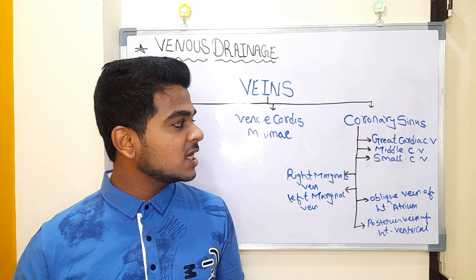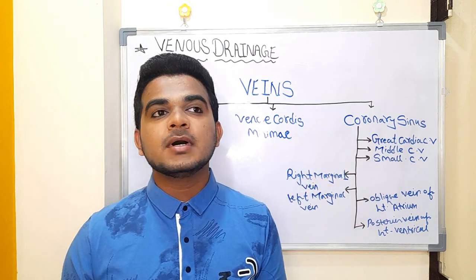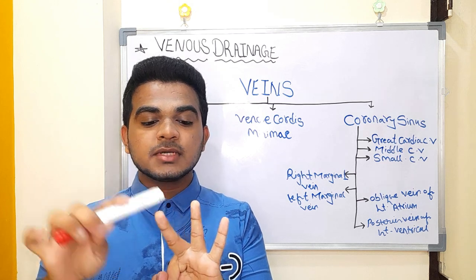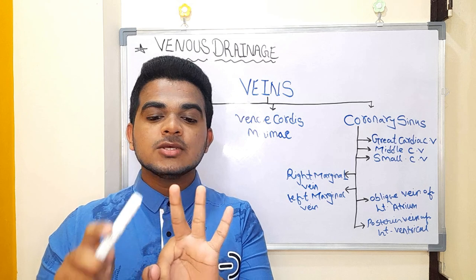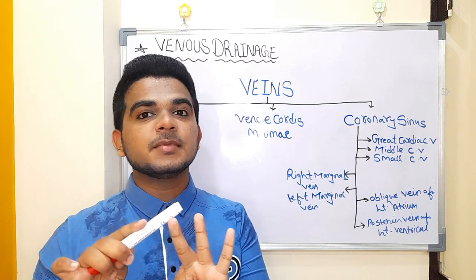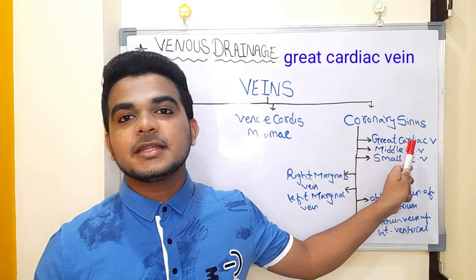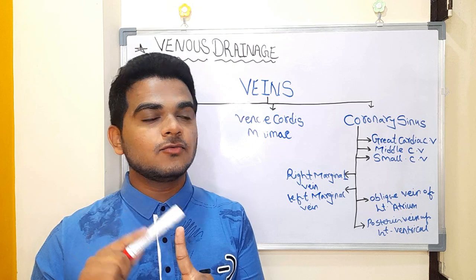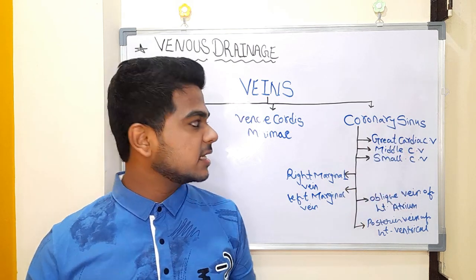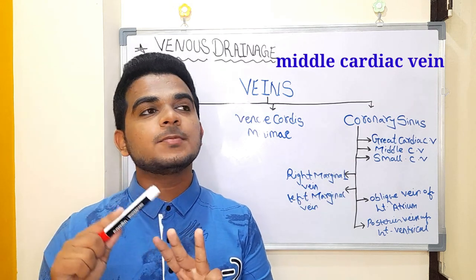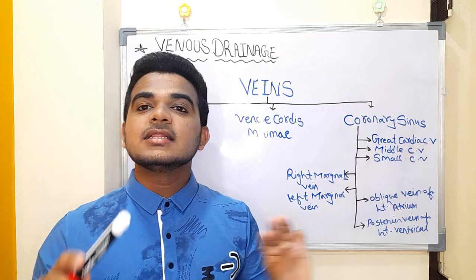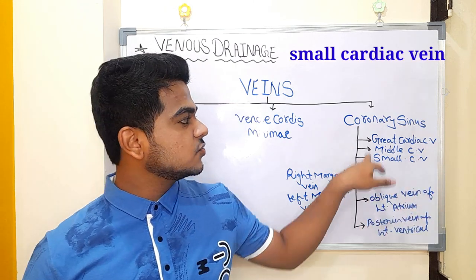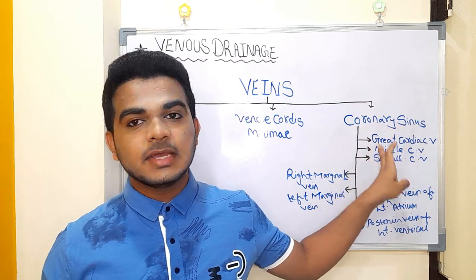So these three major veins of the heart — and under the coronary sinus there are seven veins. To remember the first three veins under the coronary sinus, just imagine three brothers: big brother, middle brother, and small brother. From big brother, keep in mind the great cardiac vein. From middle brother, the middle cardiac vein. From small brother, the small cardiac vein.